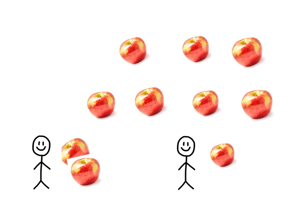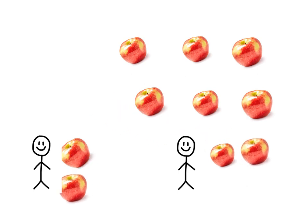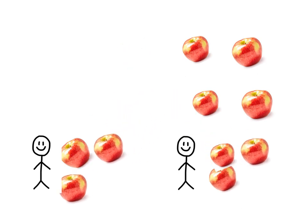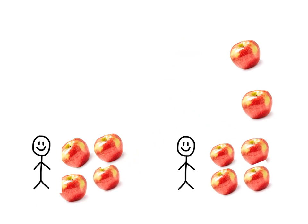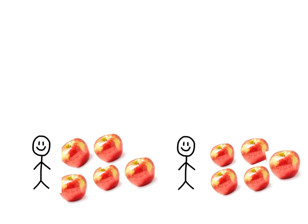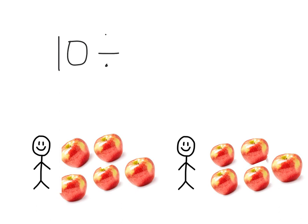Another one for this person, another one for this person. And I am going to keep going, sharing them one for each person until they are all shared out. And I can see that each person gets five apples. The way that I write this as a number story is: ten apples divided by two people equals five apples each.